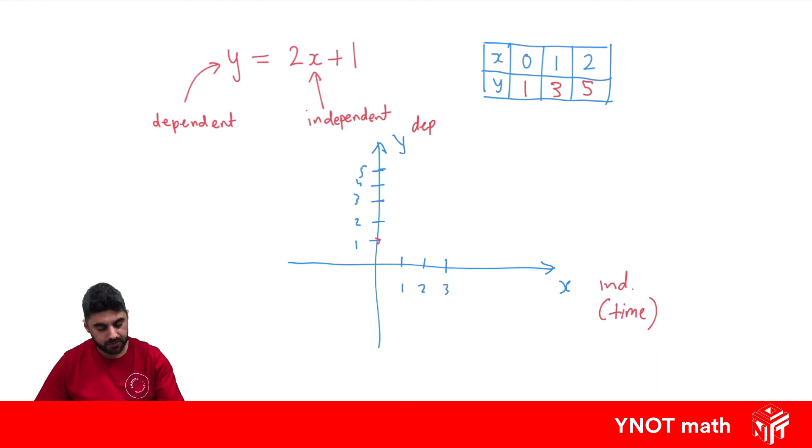So 0, 1 will be here. 1, 3 will be here. And 2, 5 will be up there. And we can see our relationship of a straight line, where x is independent of y.